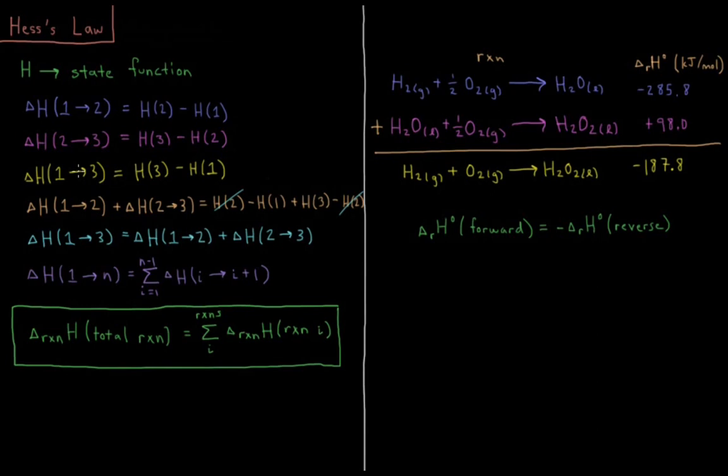The enthalpy change from 1 to 3 is the same as going from 1 to 2 and then from 2 to 3. We can extend this in general: the enthalpy of going from state 1 to state n is the sum of the enthalpy change that occurs during all the processes that take us from 1 to n.